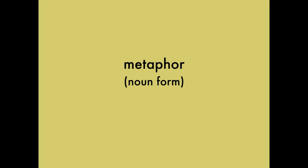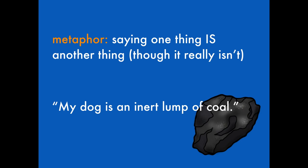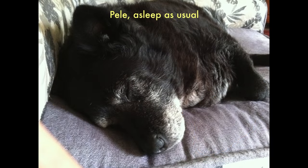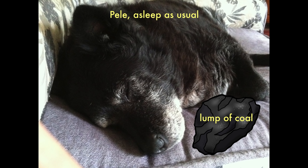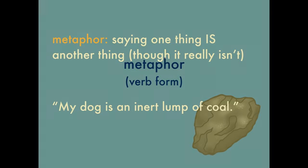First, metaphor. This is when you say one thing is another thing. Like if I talk about my elderly dog being an inert lump of coal — this is what he looks like. As you can see, he isn't actually a combustible black rock of carbonized plant matter. I'm just saying he hardly ever moves and sleeps like 23 hours a day. That's a metaphor in the form of a noun. My dog equals a lump of coal. This noun is that noun. That's a metaphor.